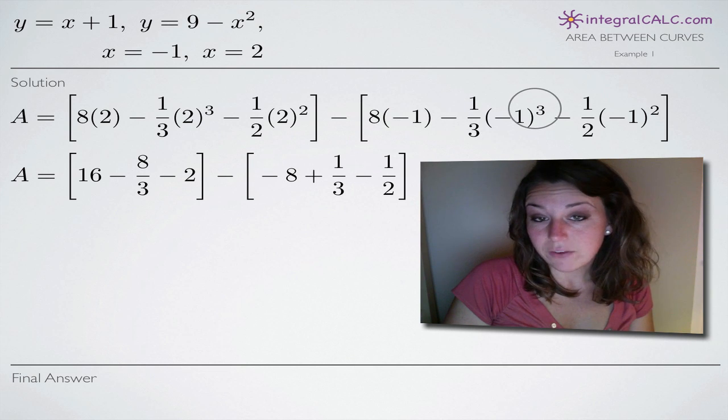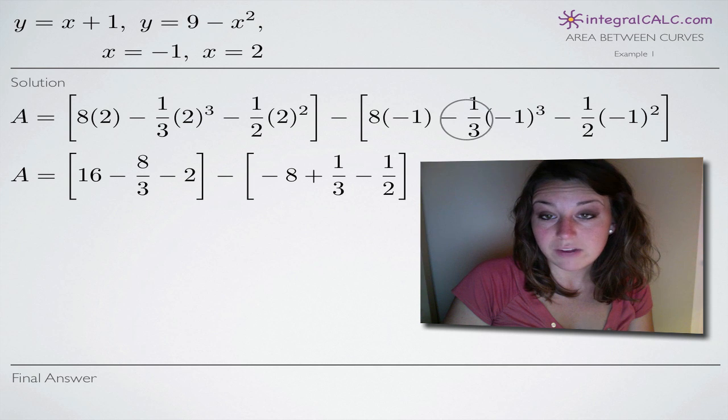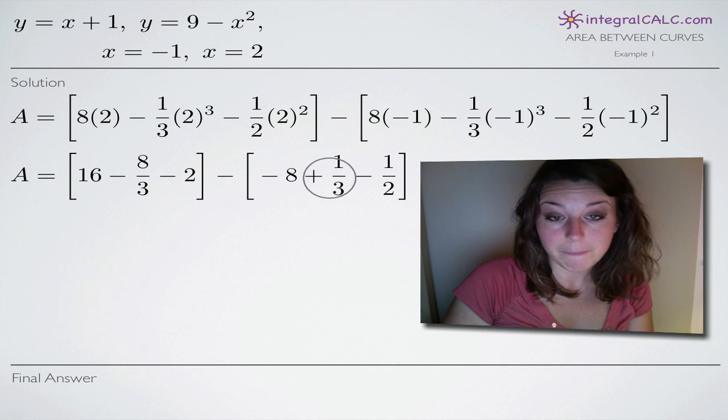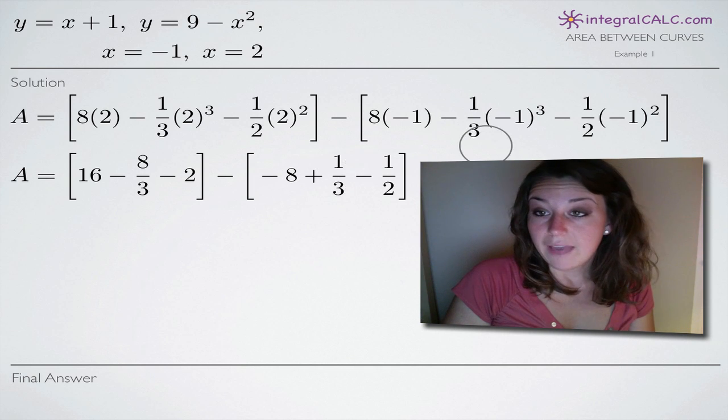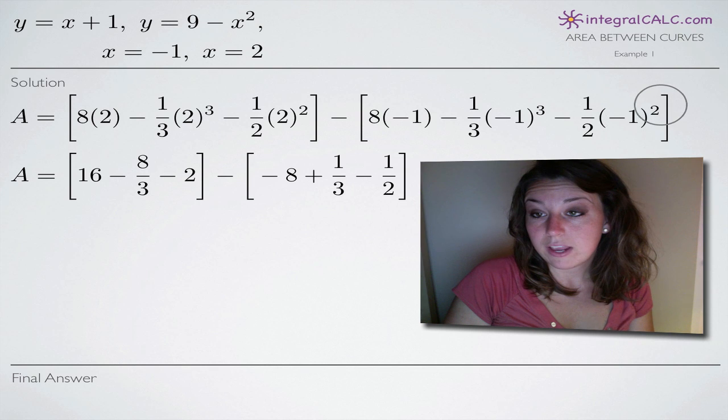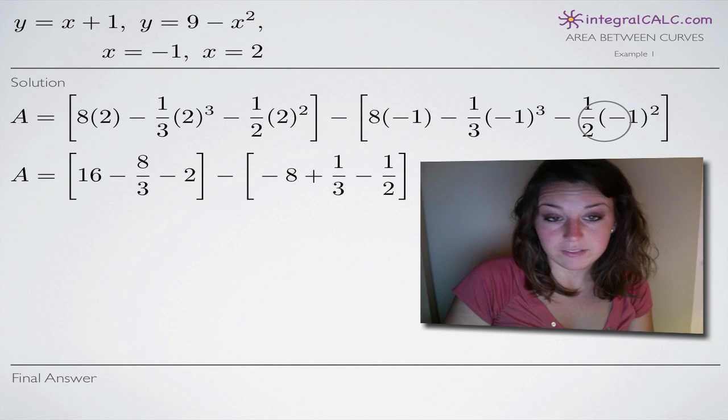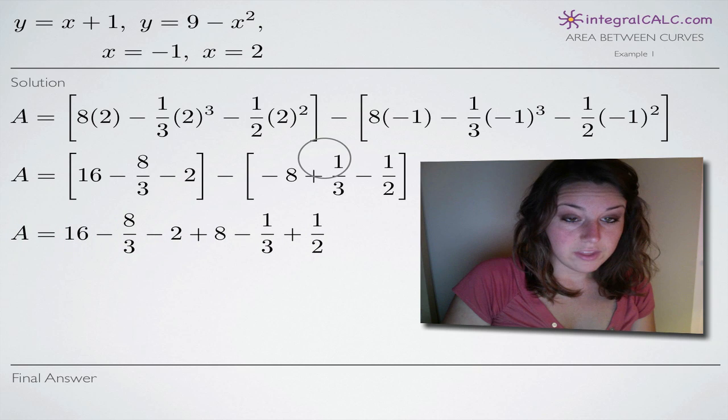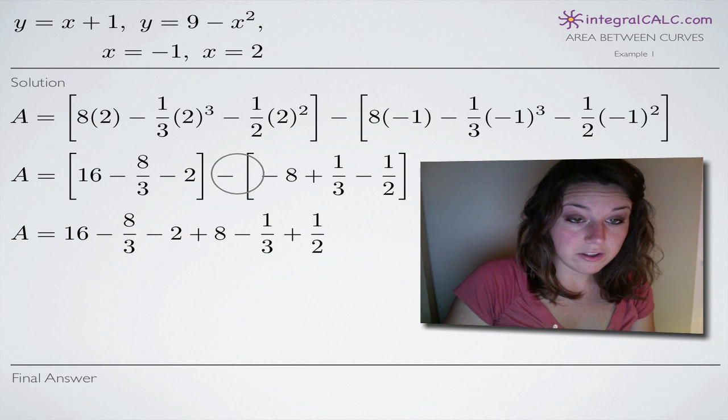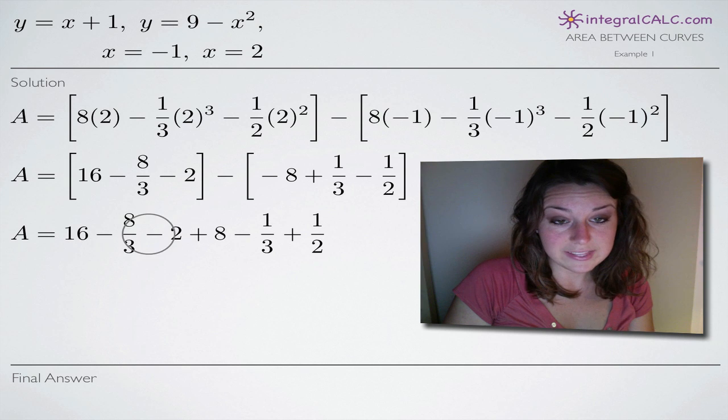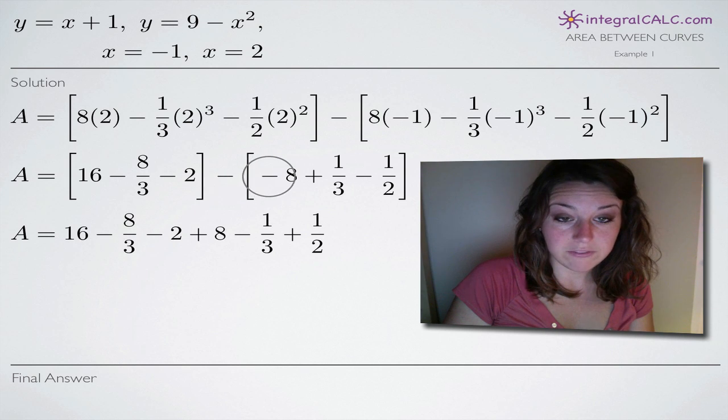Negative 1 cubed is negative 1 so we end up with negative 1 times negative 1 third gives us a positive 1 third, and then negative 1 squared here is a positive 1, times negative 1 half gives us negative 1 half.